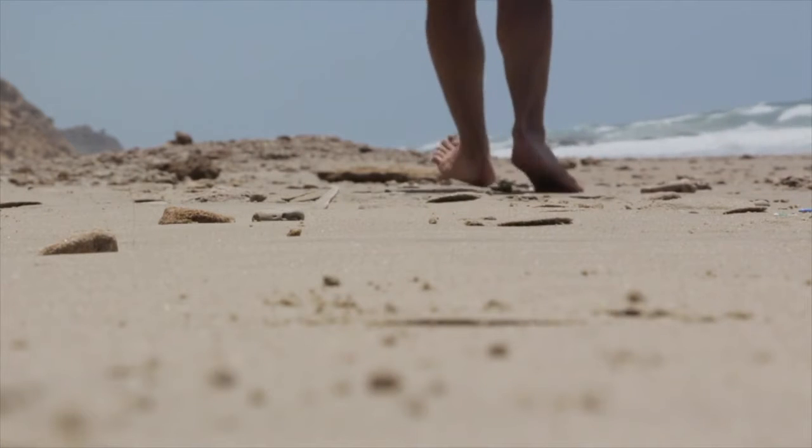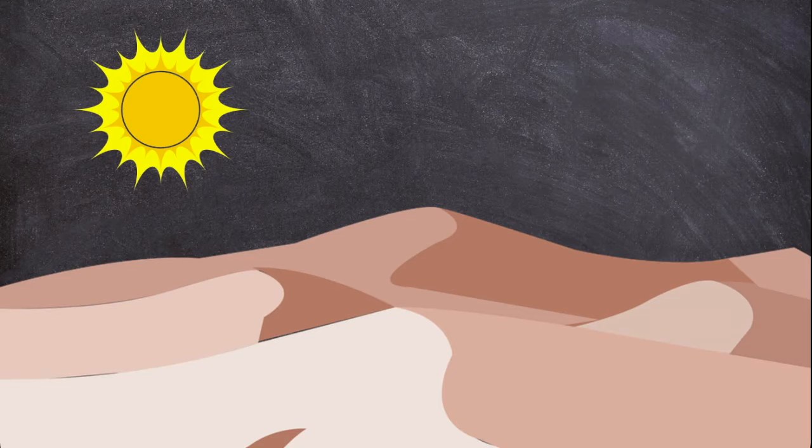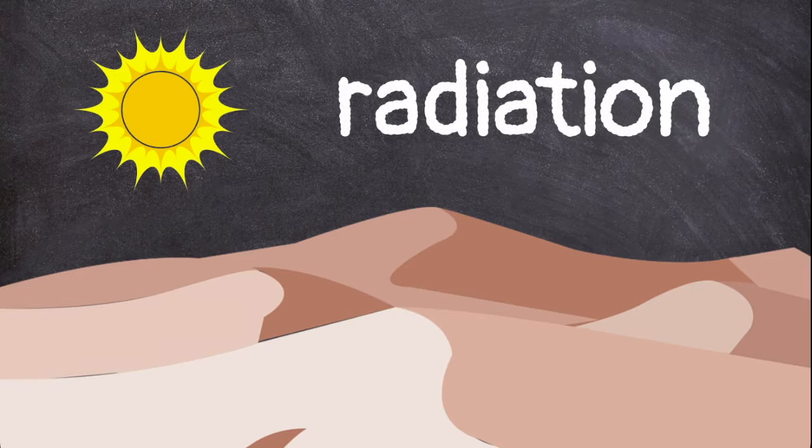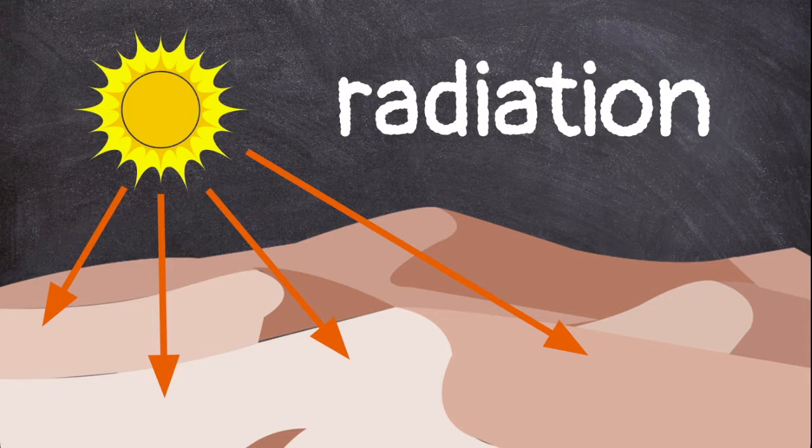Have you ever been to the beach in the summer and burned your feet on hot sand? This is an example of radiation. Radiation happens when heat is transferred through the air from something hot, like the sun, to something cold, like the sand.